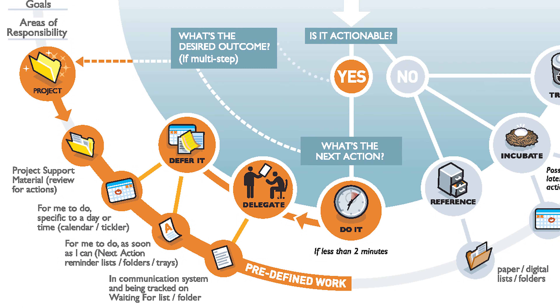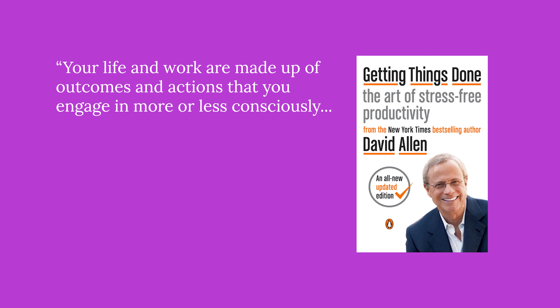If you've determined that yes, something is actionable, then you need to ask yourself: what is the very next action? After one action, is it complete? If not, you have a project. For example, planning my daughter's third birthday — it's going to take more than one thing to complete, and that means it's a project. According to GTD, anything that has two or more steps is a project.